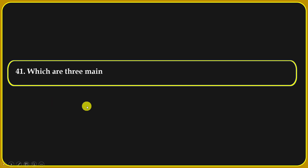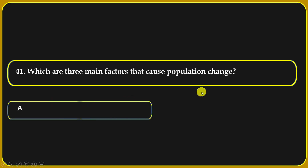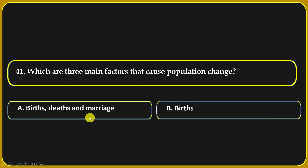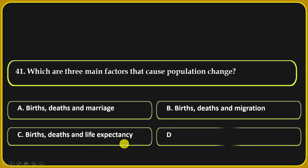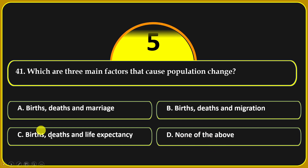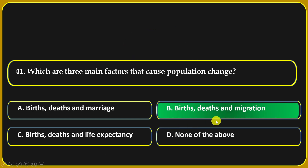Which are the three main factors that cause population change? Birth, deaths and marriage; birth, deaths and migration; birth, deaths and life expectancy; or none of the above. Birth, death and migration is the correct answer.